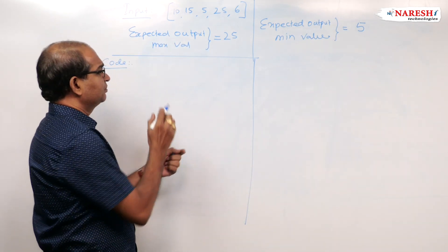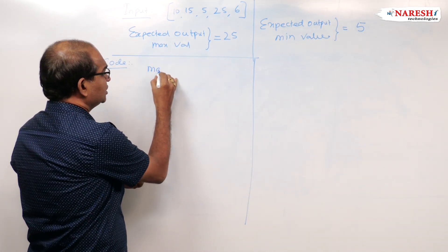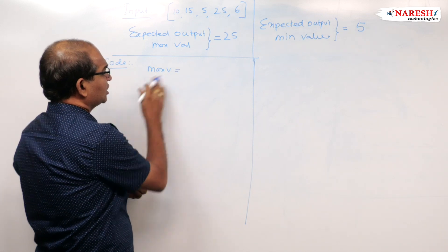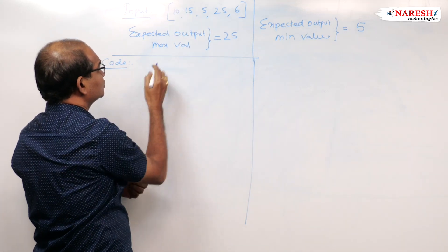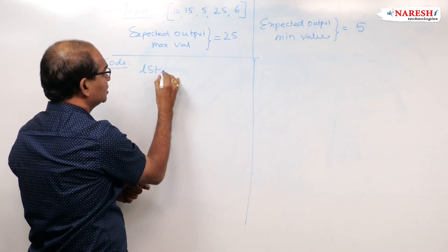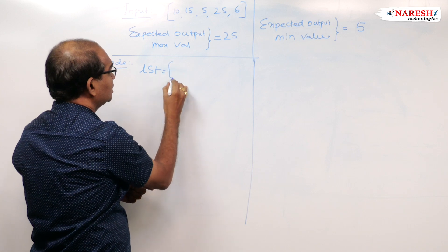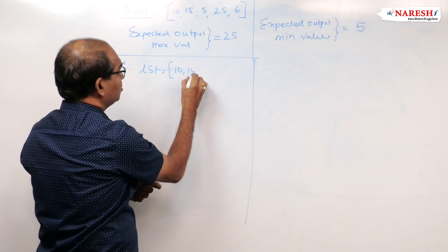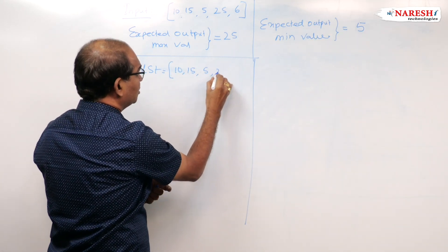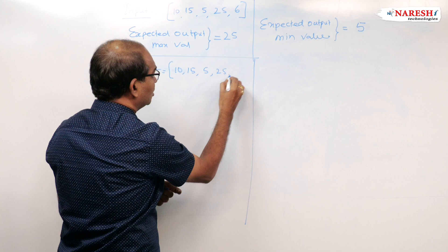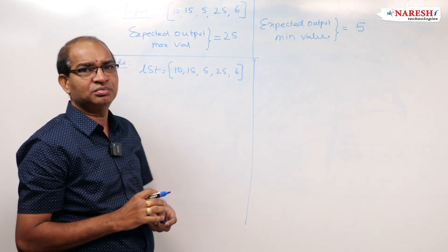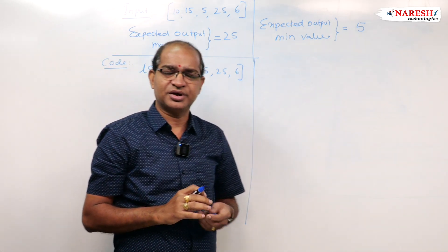I am using max_v. First of all, I will take these values in the form of a list. LST is equal to 10, 15, 5, 25, 6. This is the list object created.